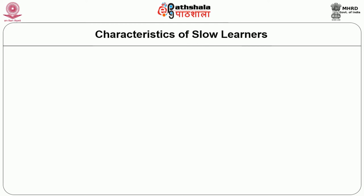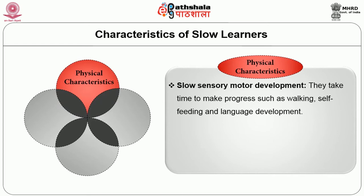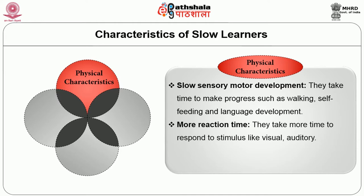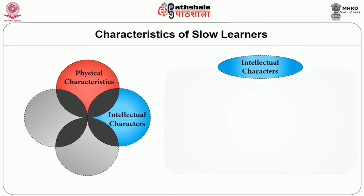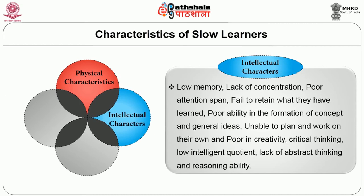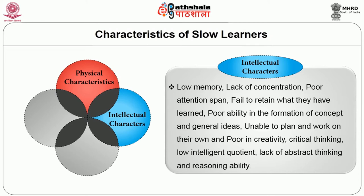Physical characteristics of slow learners include: slow sensory motor development — taking more time to make progress in walking, self-feeding and language development; more reaction time — taking longer to respond to visual and auditory stimuli; and defects in vision, hearing and speech. They find it difficult to discriminate between color and size. Intellectual characteristics include: low memory, lack of concentration, poor attention span, failure to retain what they have learned, poor ability in forming concepts and general ideas, inability to plan and work on their own, and poor creativity and critical thinking.